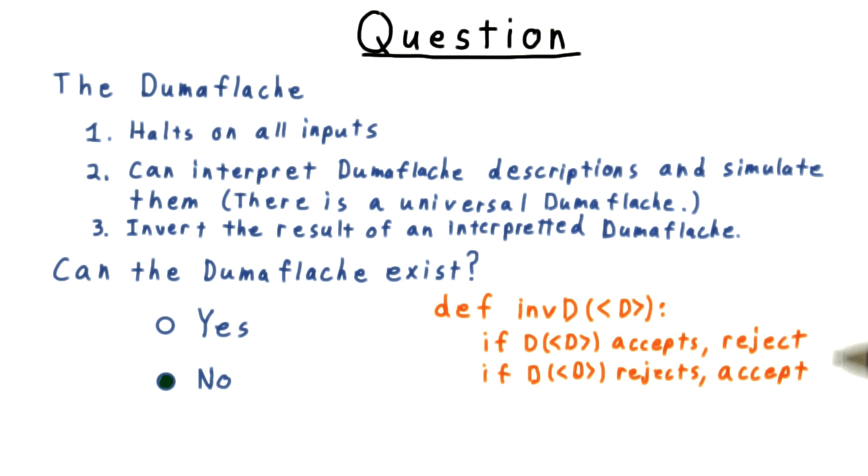The Duma-Flichy model allows us to do this, and the Duma-Flichy model must always halt. Yet what happens when we run inverse d on its own description?